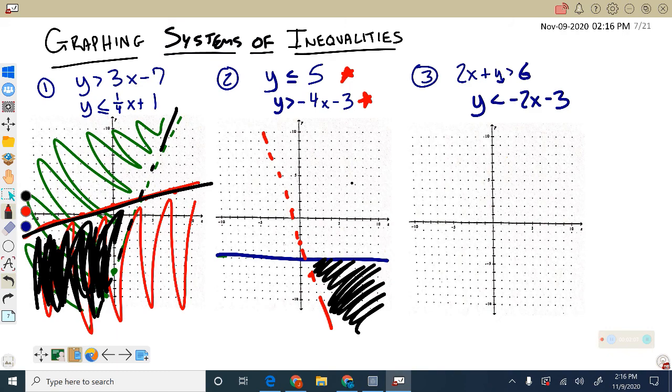Now this third one here is tricky just because we don't have yet y by itself. We just need to get y by itself. We've done that plenty of times. So we have y would be greater than negative 2x plus 6, and we subtract 2x from both sides to do that.